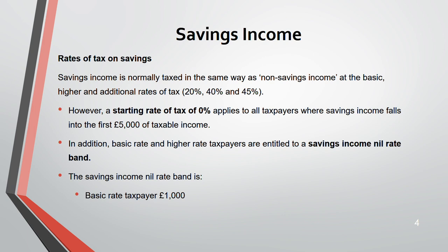The savings income nil rate band works as follows: if you are a basic rate taxpayer, you get £1,000 nil rate band — meaning £1,000 of your income at zero percent. If you are a higher rate taxpayer, you get £500. The moment you move from basic to higher rate, your nil rate band halves — higher the income, lower the benefit. If you are an additional rate taxpayer, there is zero nil rate band — no savings income nil rate band at all.